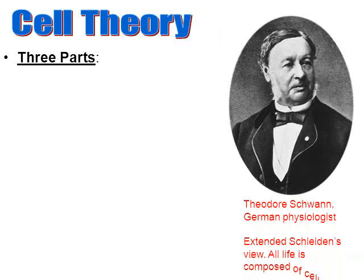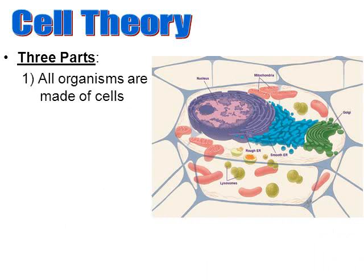Here's another German scientist, a physiologist by the name of Theodor Schwann. Schwann and Schleiden were actually friends — they went to dinner together and discussed their observations. Based on their discussions, Schwann, who was studying animal cells, made a similar conclusion: not just plants are based on cells, but so are animals. He concluded that all life — plant and animal — is composed of cells. That really is part one of our cell theory: all organisms are made of cells.